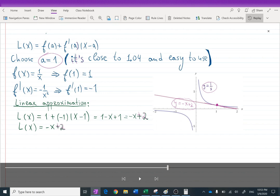So if it is close to 1 over x, then if we need to calculate some numbers close to 1, and we are very close to 1 because we asked to calculate 1.04, then why not use the easy function? And negative x plus 2 is way easier to use than 1 over x.